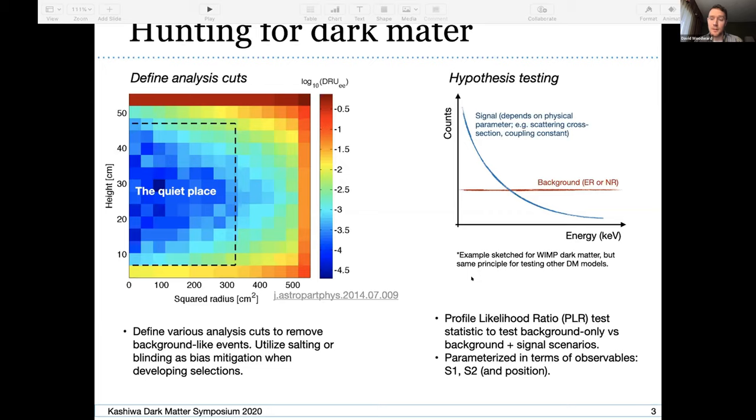This is background data from the LUX experiment on the left, and on the right I'm just saying what you would do then with that final data set. You would basically do a hypothesis test to see: does your data look like your expected backgrounds, which is maybe a flat spectrum at low energies, the red line here, or does it look like background plus signal? Here I sketched a signal model for WIMPs, but it could be any dark matter candidate that you're comparing your data to. Typically we use a profile likelihood ratio analysis to do this, and things are parameterized in terms of the observables, the S1, the S2, and the positions of the events.